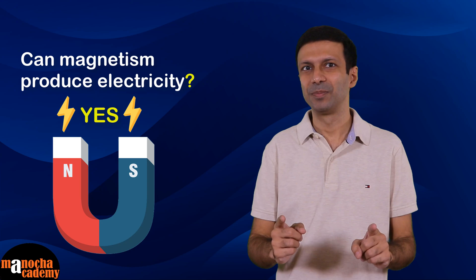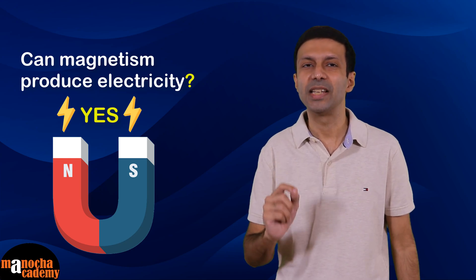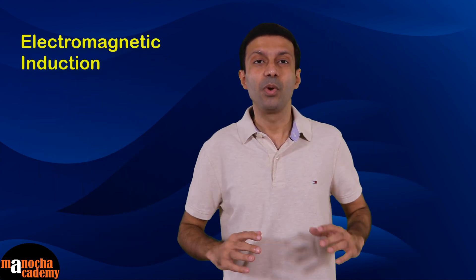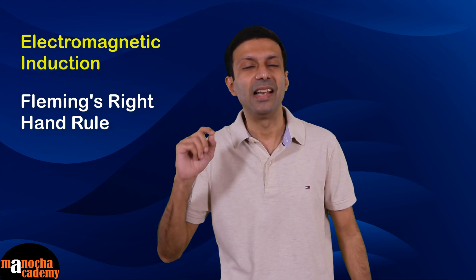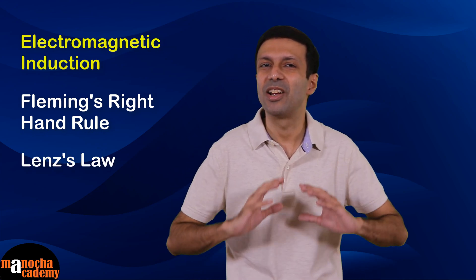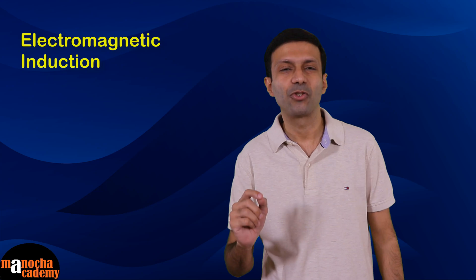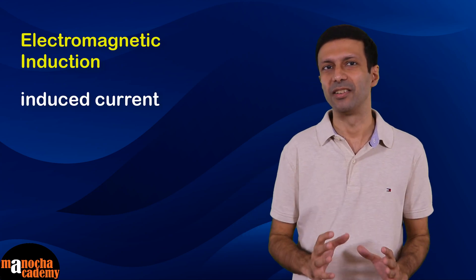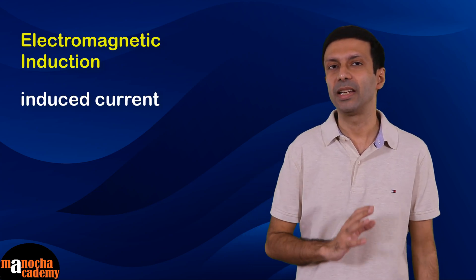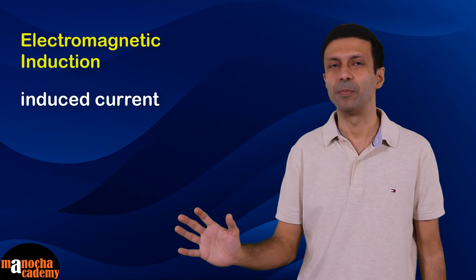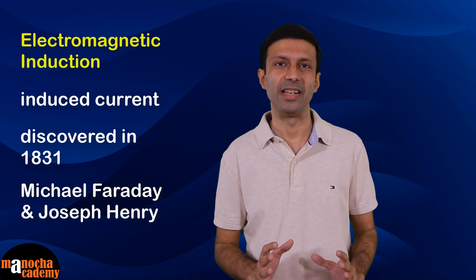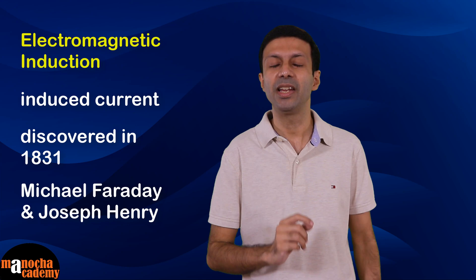The answer is yes. This phenomenon is known as electromagnetic induction, and that's going to be the topic of this video. We are also going to look at Fleming's right-hand rule and Lenz's law. The production of electricity from magnetism is called electromagnetic induction, and the electric current produced is called induced current. Electromagnetic induction was discovered about 200 years back in 1831 by British scientist Michael Faraday and American scientist Joseph Henry, independently.